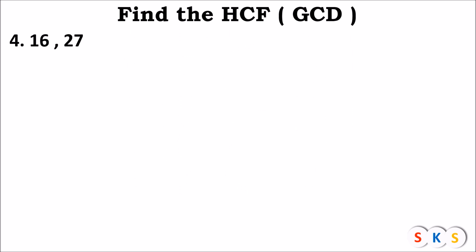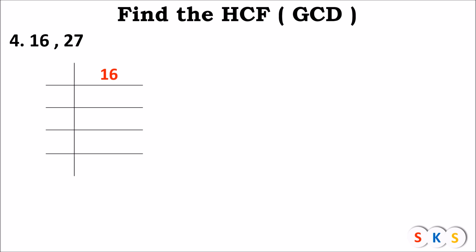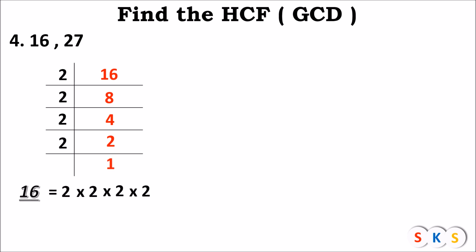Question 4: Find SCF of 16 and 27. First, find the prime factor of 16. 16 is divisible by 2, which is prime. 16 ÷ 2 = 8, 8 ÷ 2 = 4, 4 ÷ 2 = 2, 2 ÷ 2 = 1. Therefore, the prime factor of 16 is 2 × 2 × 2 × 2.